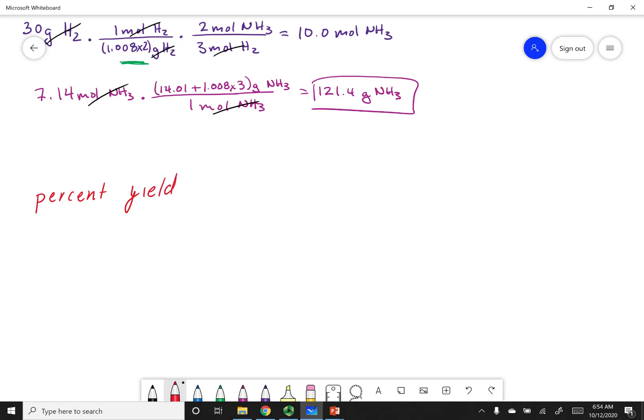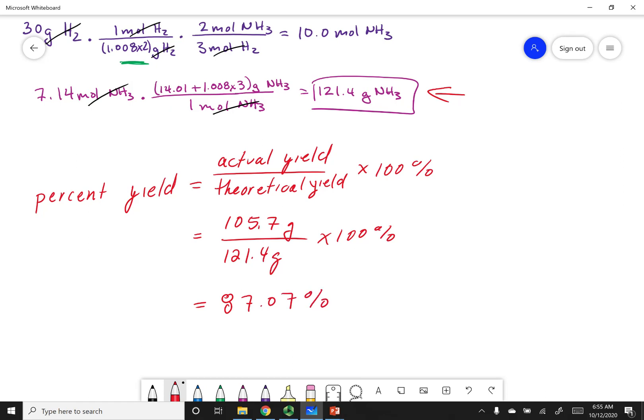The percent yield equals the actual yield divided by the theoretical yield times 100%. Looking at the question, 105.7 was the experimental result, so that's the actual yield. We calculated the theoretical yield in the last quiz, that was 121.4 grams of NH3. Multiply this by 100%, and the calculation gives 87.07% as the percent yield.